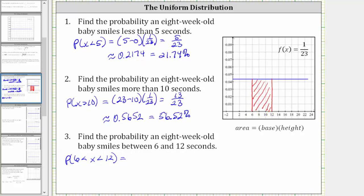where the base has a length of 12 minus 6 or 6 units. And once again, the height is 1/23rd, which gives us 6/23rds as the probability.